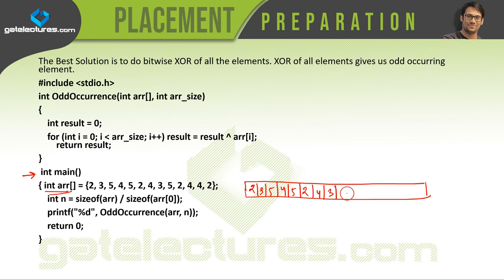Let us see the elements that are present inside this array: 2, 3, 5, 4, 5, 2, 4, 3, 5, 2, 4, 4, and 2. The index locations are 0, 1, 2, 3, 4, 5, 6, 7, 8, 9, 10, 11, and 12.